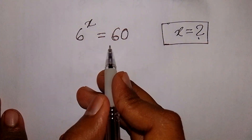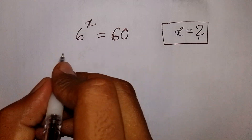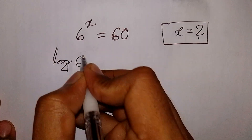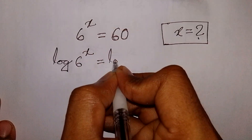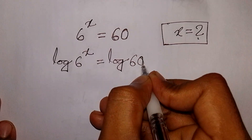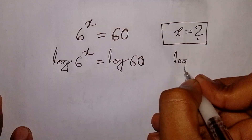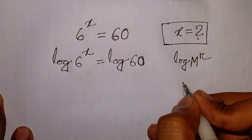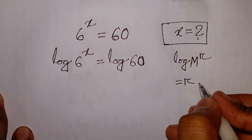6 to the power x is equal to 60. Find the value of x. So first we apply log on both sides: log of 6 power x is equal to log of 60. Now here we apply the rule that log m power r is equal to r times log m.